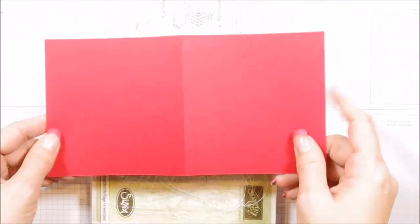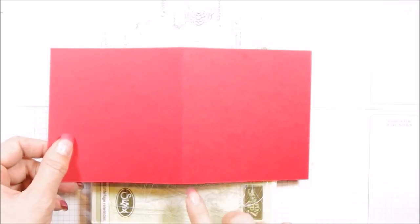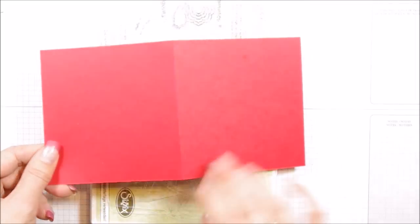First you're going to need a piece of real red cardstock cut to eight and a half by four and three quarters and then scored at four and one quarter.